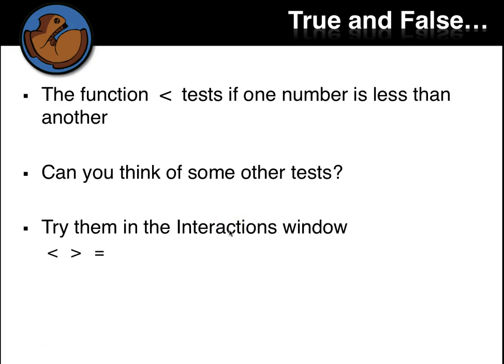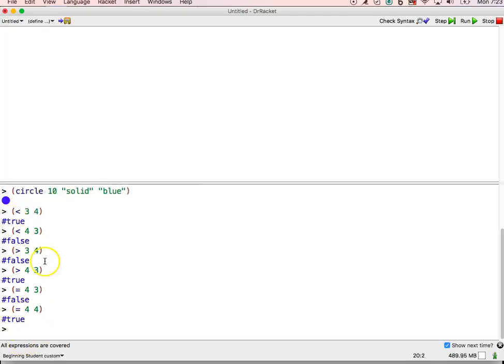So less than, equal to, greater than. What is the range of these functions? So at least all the ones we tried were, for the domain, we saw numbers. The range, no matter what we put in, was always either true or false.